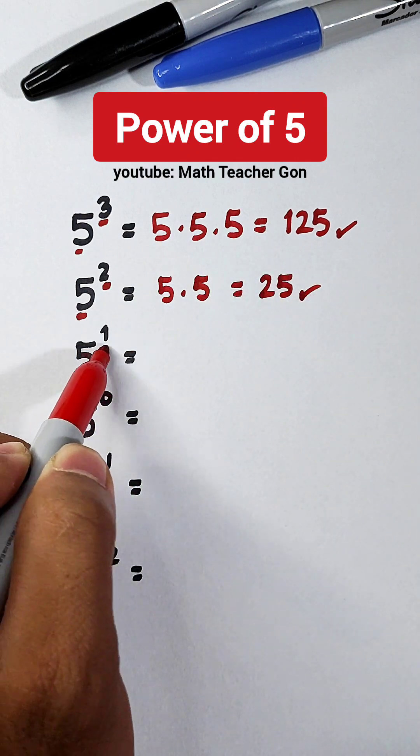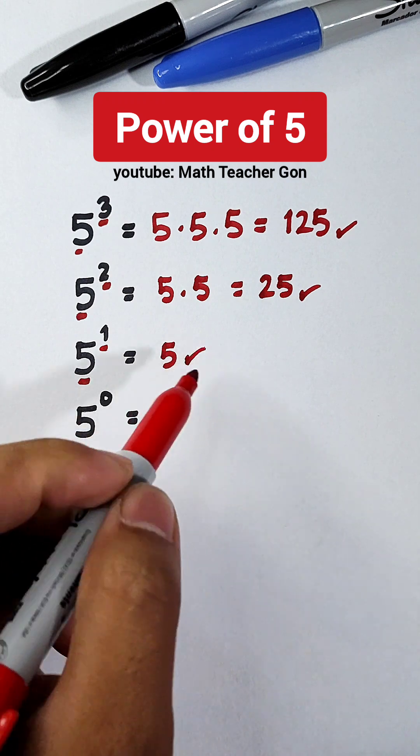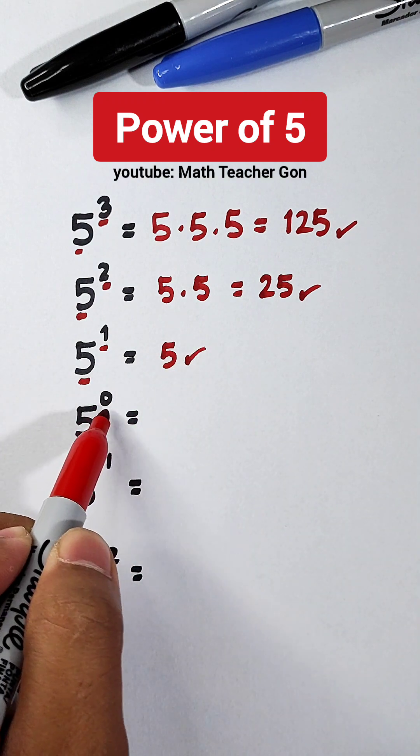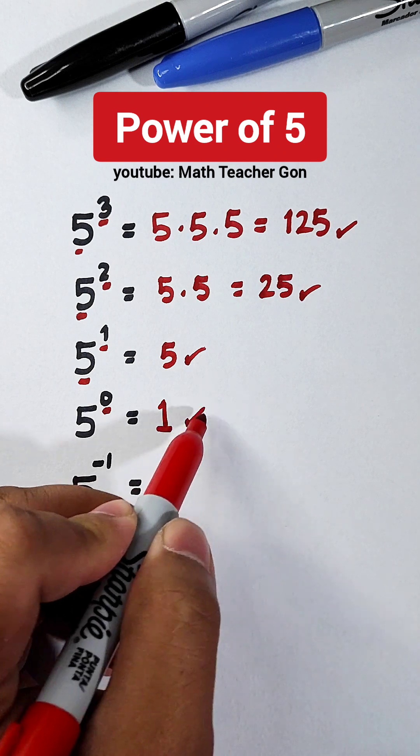This is 5 raised to 1, meaning this is simply 5. And this, 5 raised to 0, if the exponent is 0, automatically the value is equal to 1.